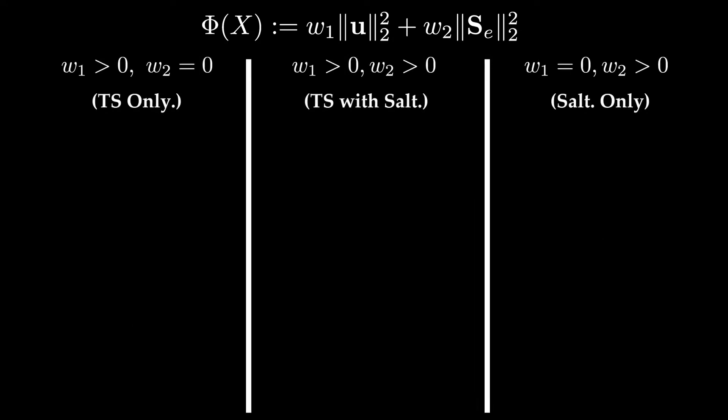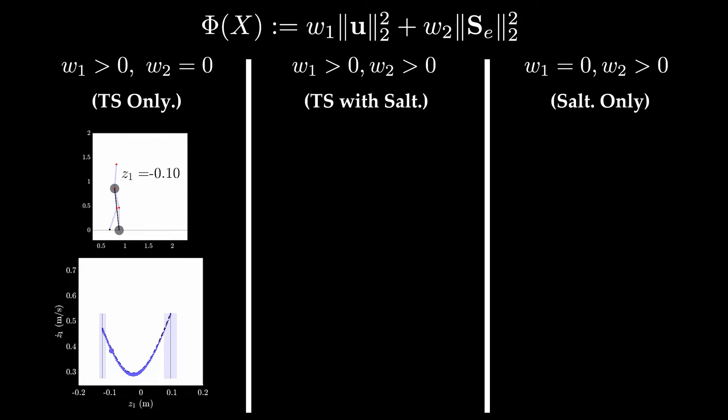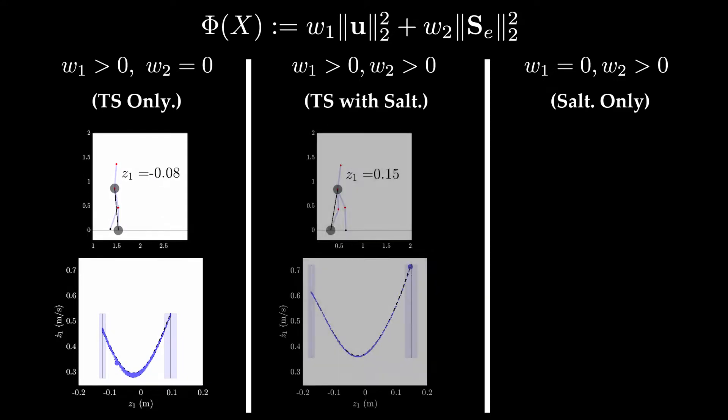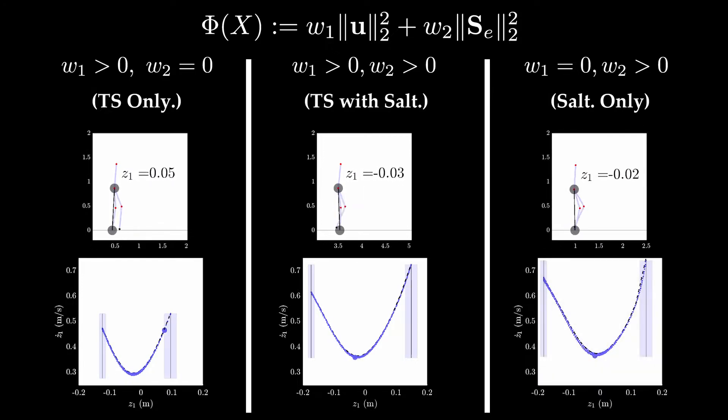To demonstrate this approach, we compare three gaits on various platforms: a gait generated with only torque squared in the cost function, a gait generated with the sum of torque squared and the induced matrix norm of the extended saltation matrix in the cost function, and a gait generated with only the saltation matrix. All gaits were generated with identical constraints and bounds otherwise.